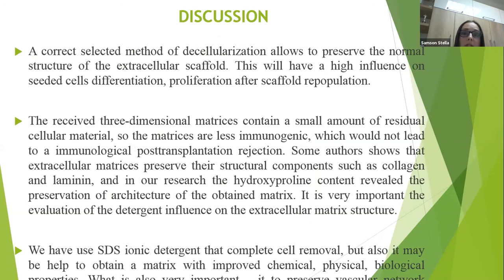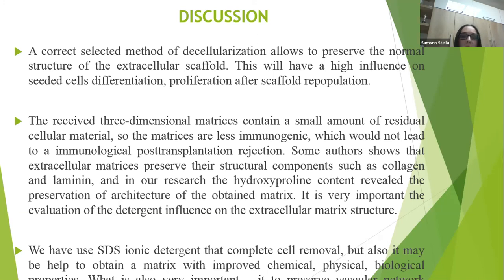A correctly selected method of decellularization allowed preservation of a normal structure of the extracellular scaffold, which will have an influence on cell differentiation and proliferation after scaffold repopulation. The received three-dimensional matrices contain a small amount of residual cellular material, so the matrices are less immunogenic, which would not lead to immunological post-transplantation rejection. Some authors show that extracellular matrix preserves its structural components such as collagen and laminin. In our research, hydroxyproline content revealed the preservation of architecture of the obtained matrix. It is very important to evaluate the detergent influence on the extracellular matrix structure. We used sodium dodecyl sulfate, an ionic detergent, which enables complete cell removal but may also help obtain a matrix with improved chemical, physical, and biological properties.